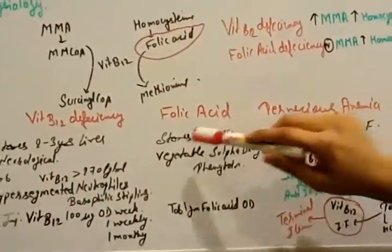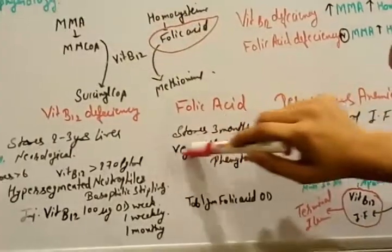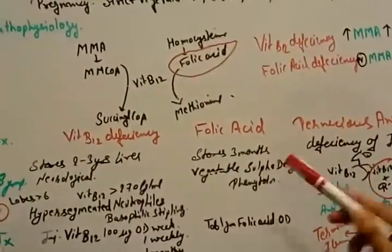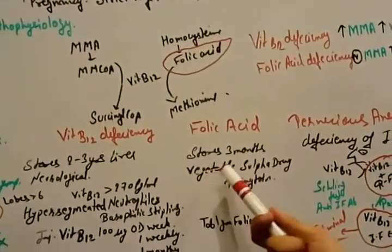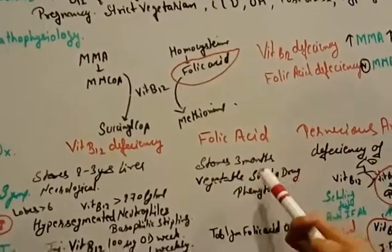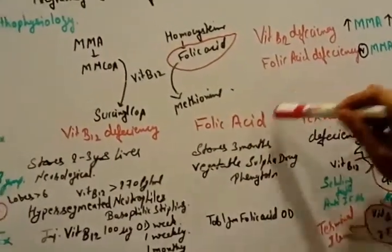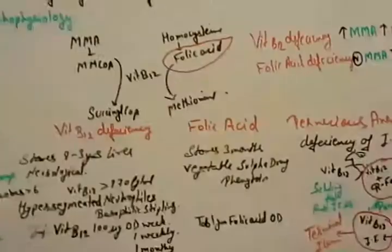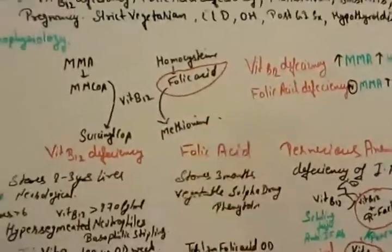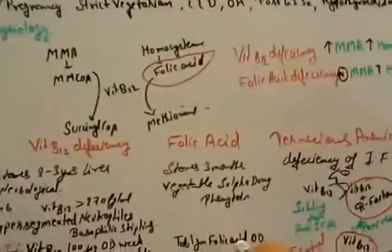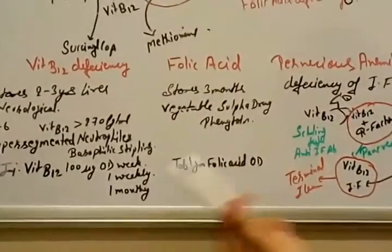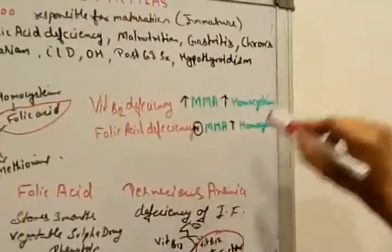In folic acid deficiency, what was happened? Folic acid storage is only for 3 months, only for 3 months. We see this folic acid only in vegetables. And those who are taking sulfa drugs and phenytoin, they are suffering from this disease, folic acid. And how to treat this folic acid deficiency? By 1 gram tablet folic acid, once daily, every day you need to take. And I already explained how to diagnose.